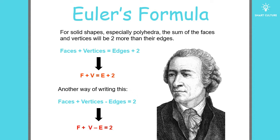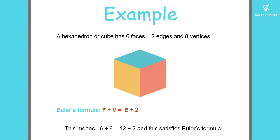Let's take a look at some examples. A hexahedron or cube has six faces, 12 edges and eight vertices. Here you can see a picture of a cube.